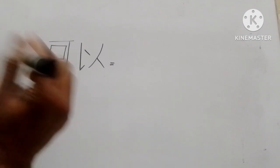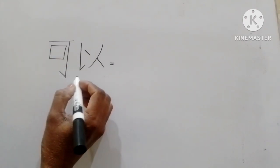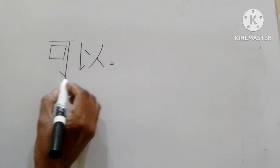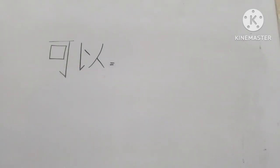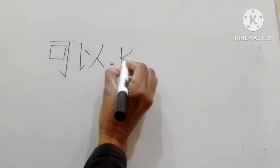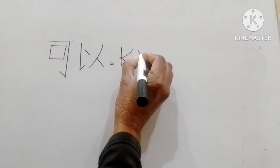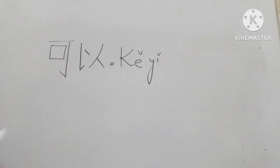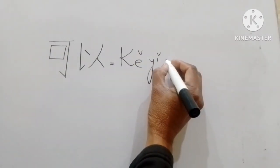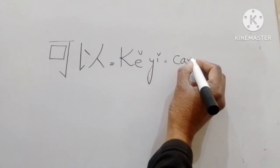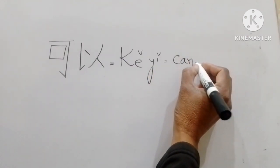Hello friends, today's word is Kh-e-e. Its sound pronunciation is written as Kh-e-e. Kh-e-e means 'can' or 'may be'.